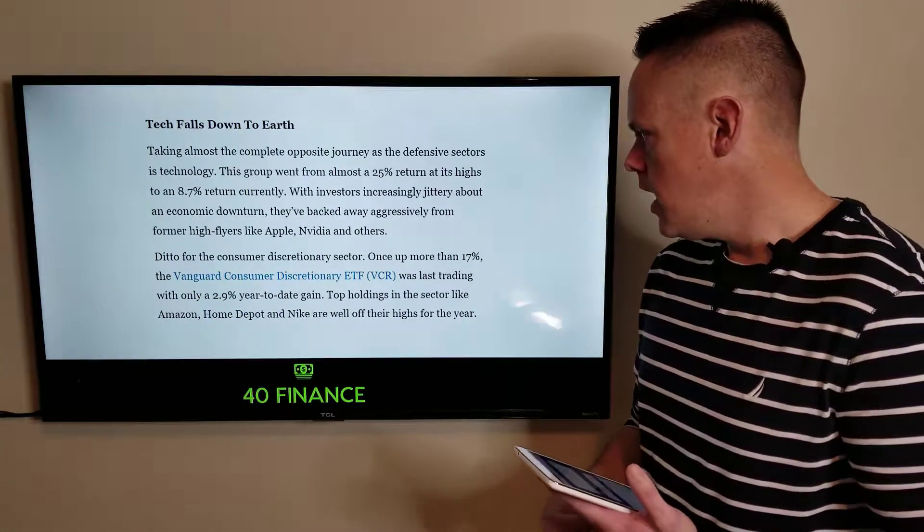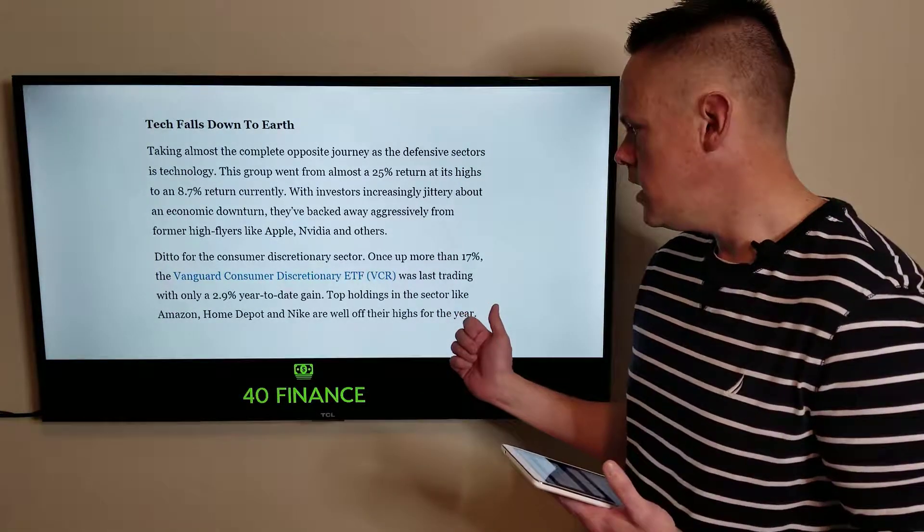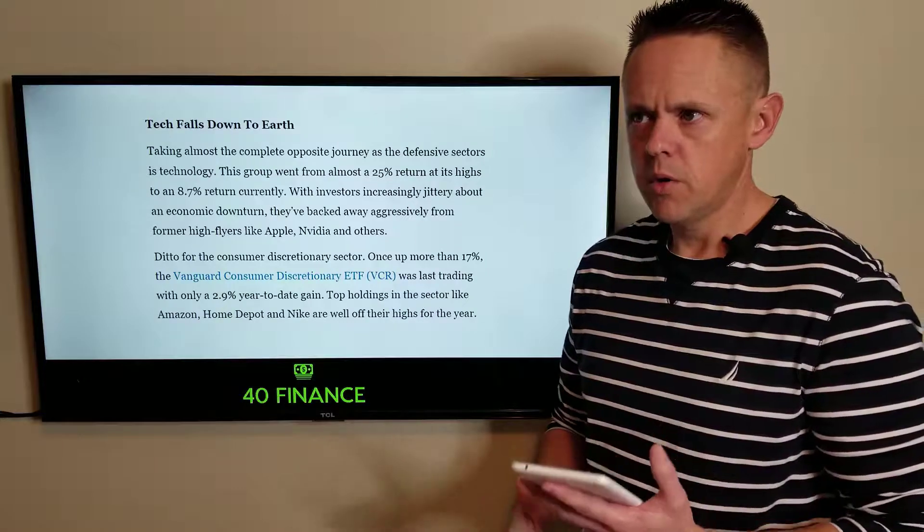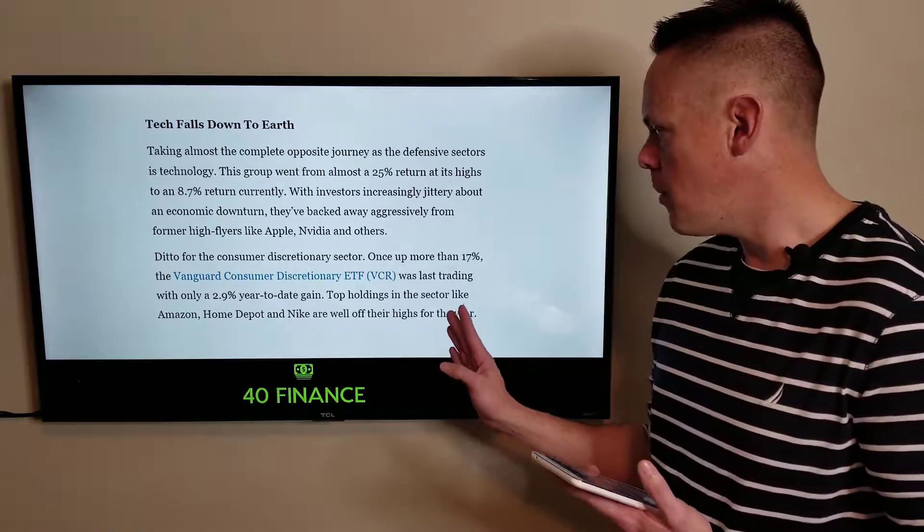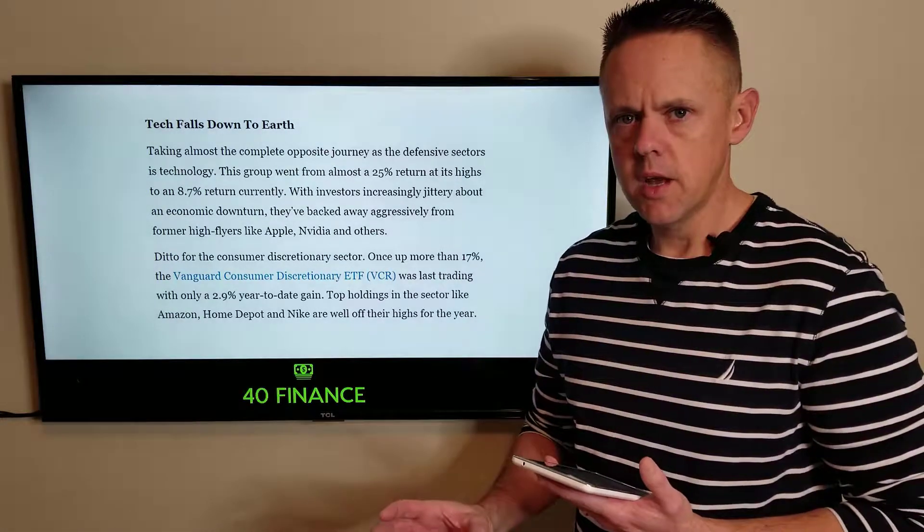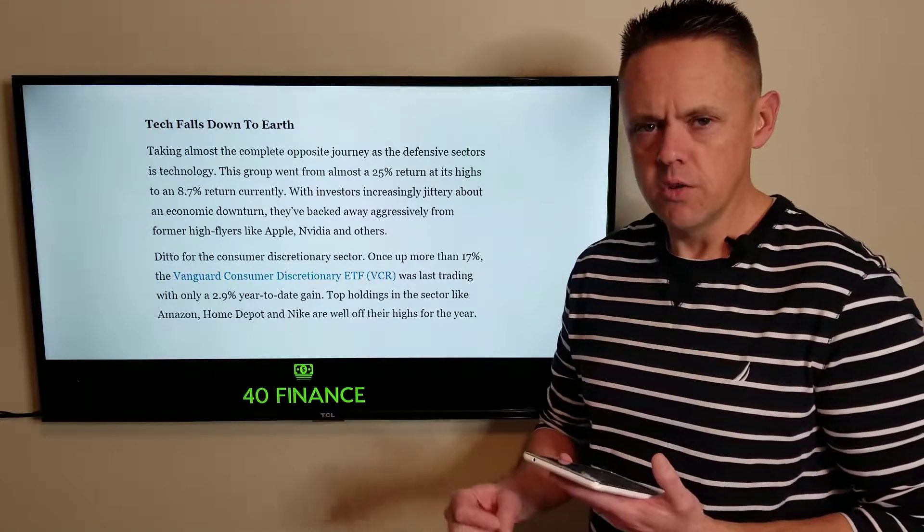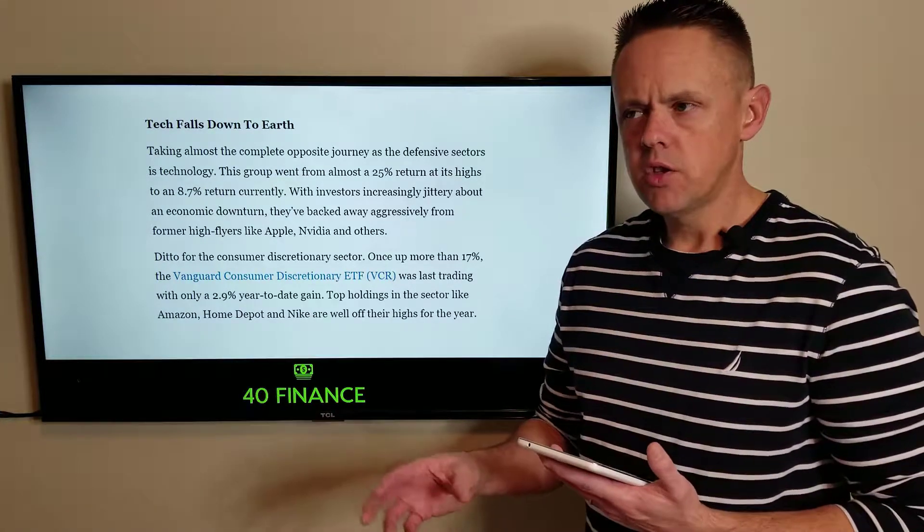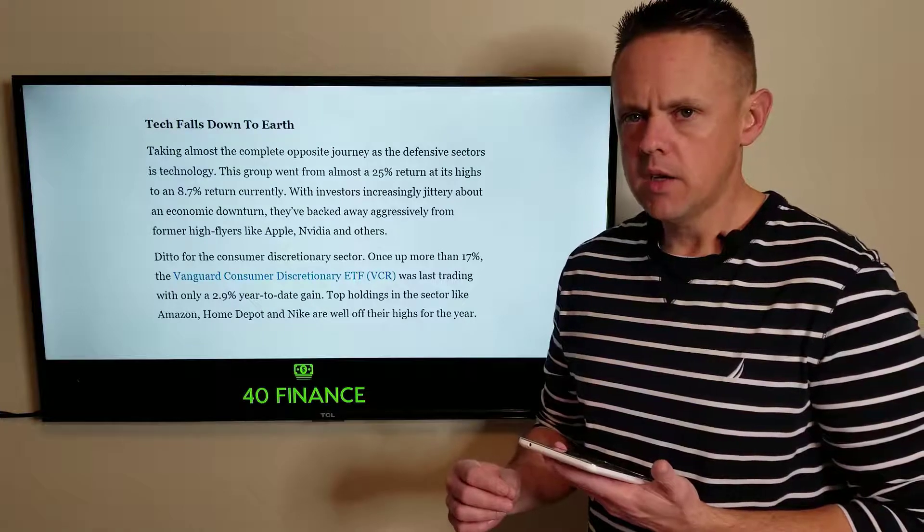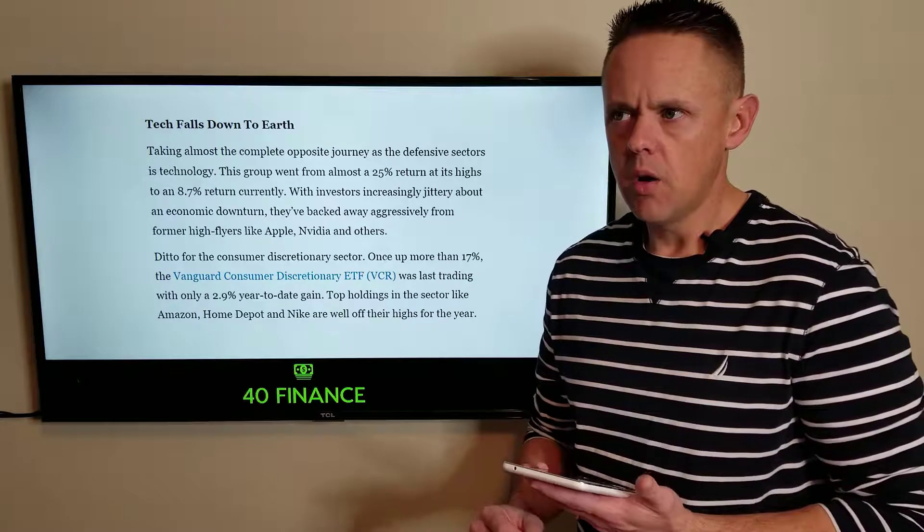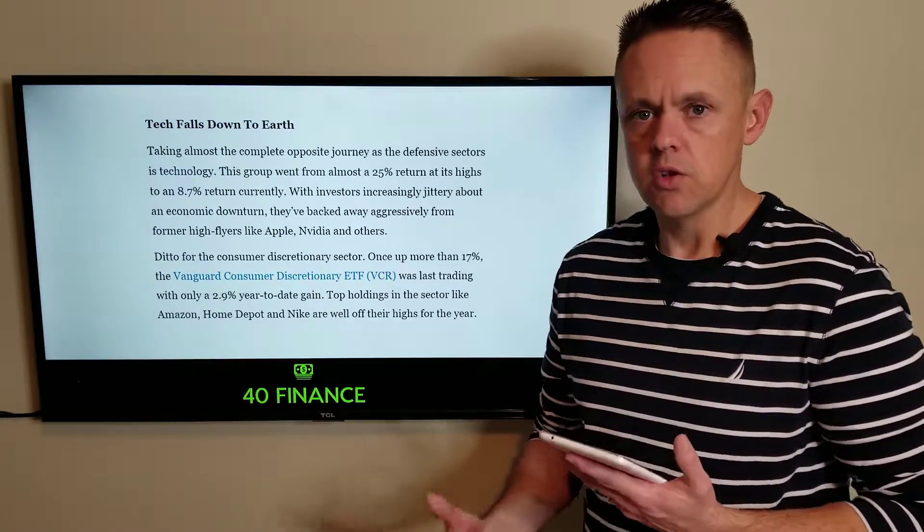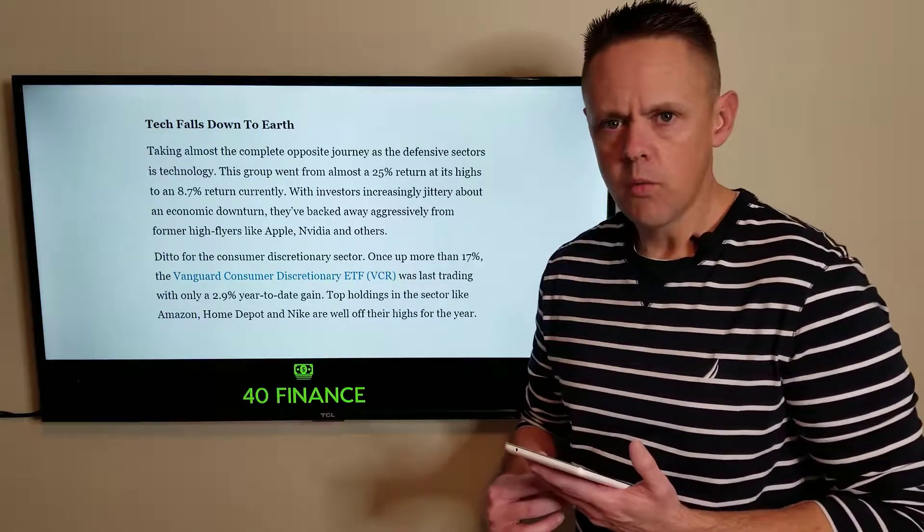On similar grounds, consumer discretionary was also up high at 17% earlier in the year, and now it's trading about 2.9% year to date gain. I'm also big on consumer discretionary, particularly in places that it connects with technology. The top holdings like Amazon, Home Depot, and Nike are all well off their highs for the year. However, I think the changing landscape in technology will continue to keep those stocks higher. Even if we had a recession, it's going to affect things more like car and house purchases. I think consumer discretionary will continue to keep its head above water in turbulent times.